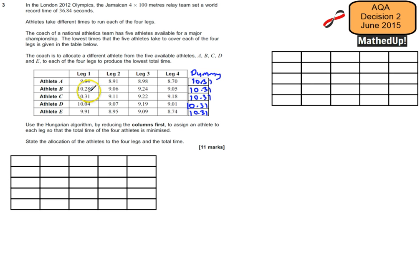So for example, in leg one, our lowest value is 9.84. So I'm going to subtract 9.84 from each cell. So 9.84 take away 9.84 is going to be 0 and then 10.28 take away 9.84 is going to be 0.44.